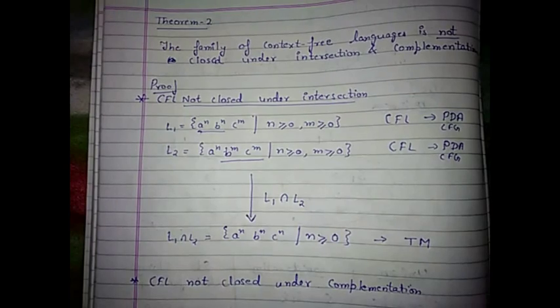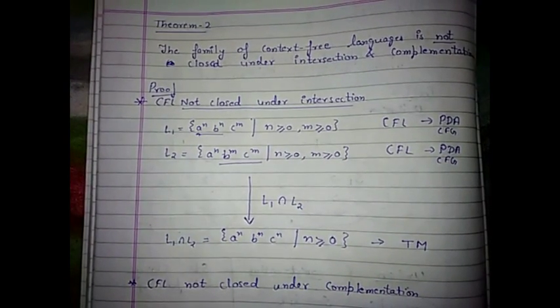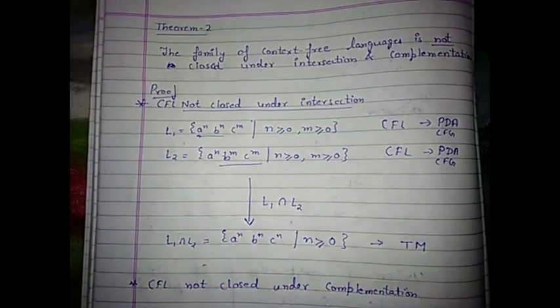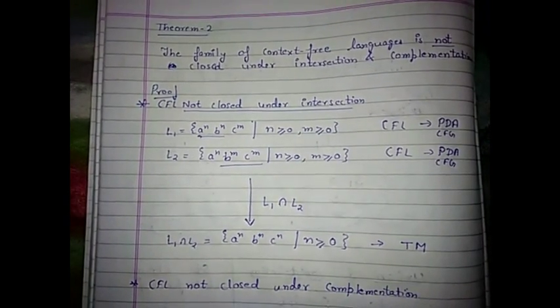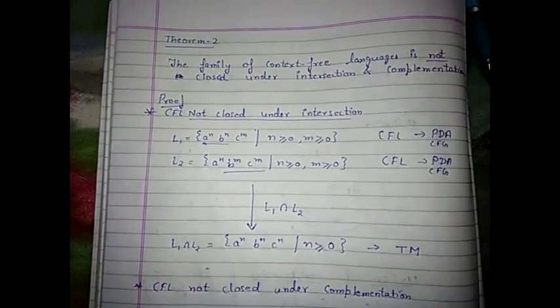Now, the next theorem on context-free languages is that context-free languages are not closed under intersection and complementation. Context-free languages are not closed under intersection; first let's prove it.